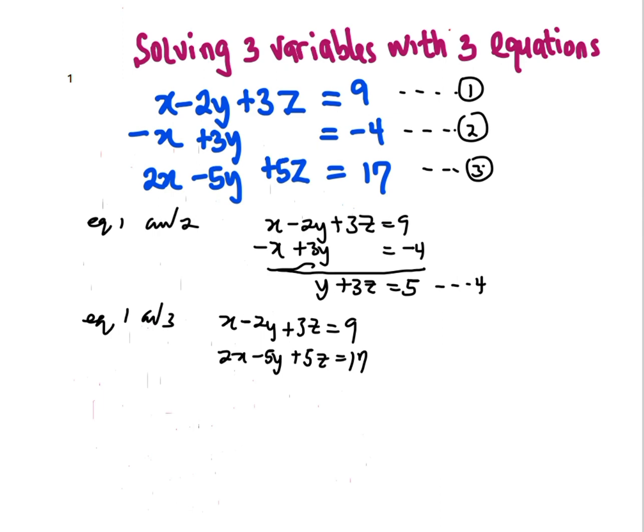Now, let's multiply equation 1 by negative 2. So, using the same method of elimination, negative 2x plus 2x is going to cancel out. Negative 2 multiplying negative 2y plus 4y minus 5y is going to be negative y.